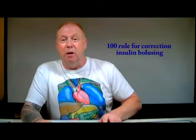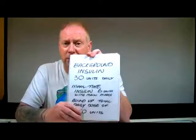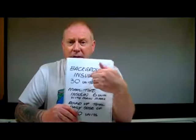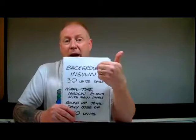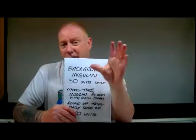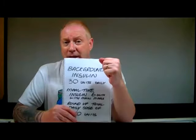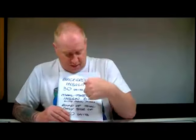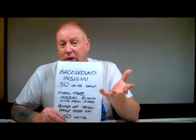So what is the 100 rule? For example, if you're on background insulin, or your long-lasting insulin is 30 units, you just need to know yours. If you're on twice a day, then you just add up the total amount of background insulin you're taking. And then if you're on a fixed bolus of 6 units of Novorapid with every meal,